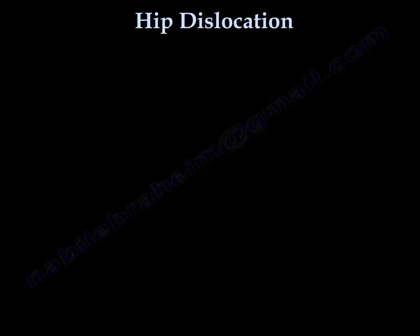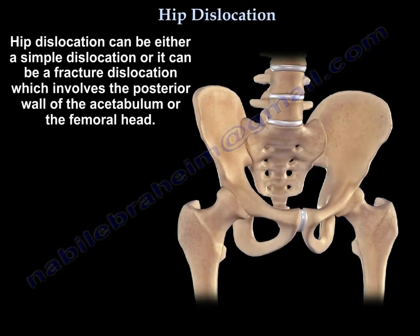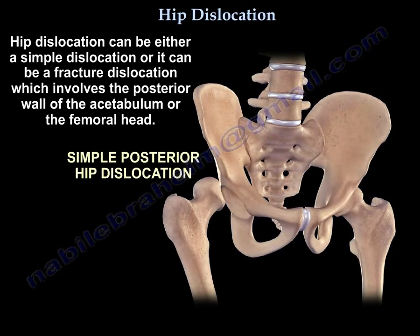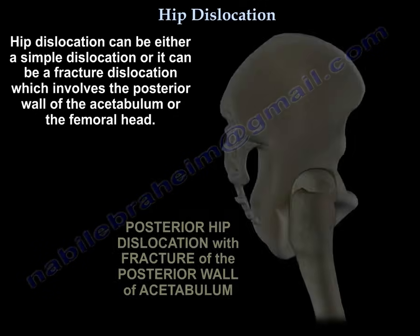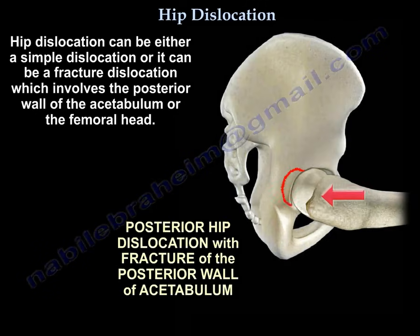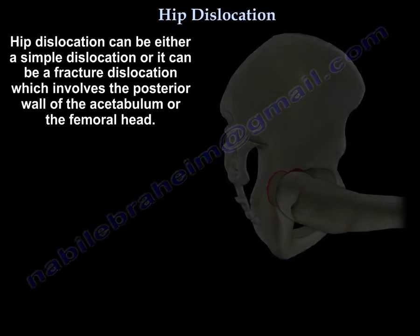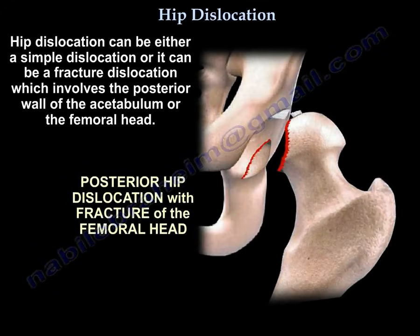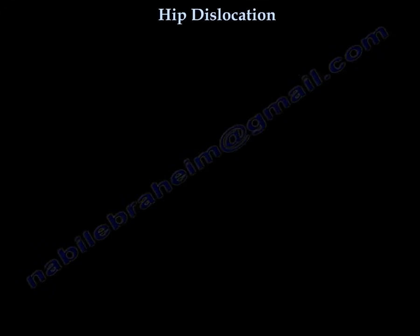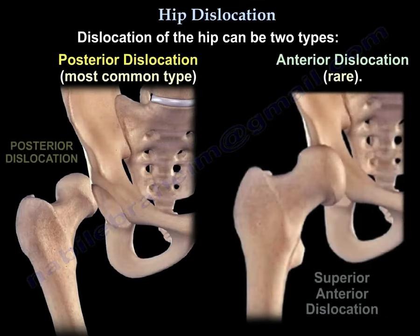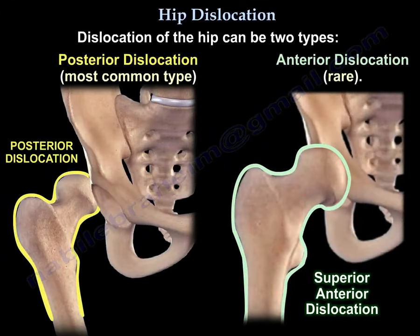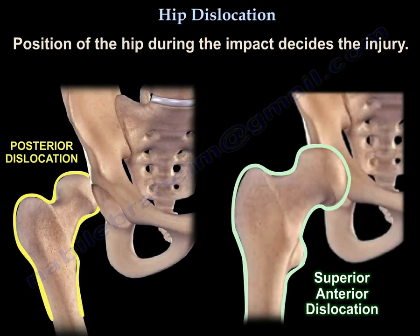Hip dislocation can be either a simple dislocation or a fracture dislocation, which involves the posterior wall of the acetabulum or the femoral head. Dislocation of the hip can be two types: posterior dislocation, which is the most common type, or anterior dislocation, which is rare. The position of the hip during the impact decides the injury.